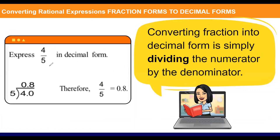For example, four fifths: put four under the division symbol. Four divided by five cannot be done directly, so add a decimal point to the right of four and directly above the quotient, then add zero. Divide 40 by five — the answer is eight, and eight times five is 40. So four fifths equals 0.8, or eight tenths.